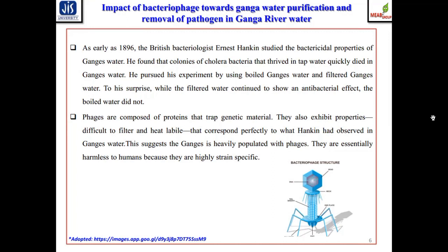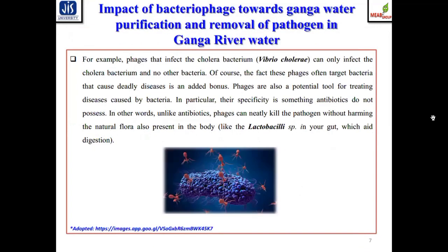Phages are composed of protein. As mentioned, they have a head, tail, collar, contractile sheath, and tail fibers. Each component of bacteriophages has a unique function that carries out the lytic or lysogenic life cycle. For example, phages that infect cholera bacteria, Vibrio cholerae, can only infect cholera bacteria and no other bacteria — that is the host specificity of a specific bacteriophage. These phages often target bacteria that cause deadly diseases, which is an added advantage.